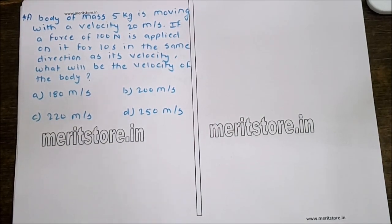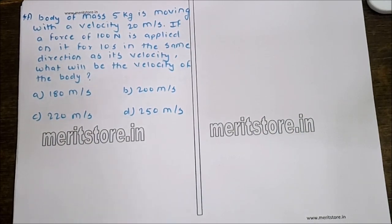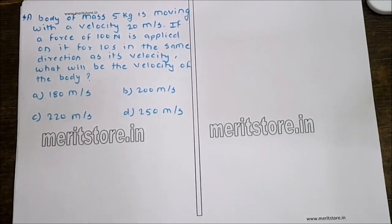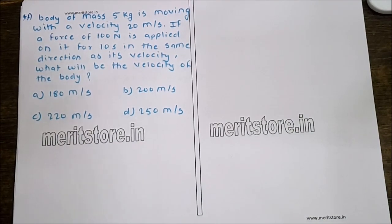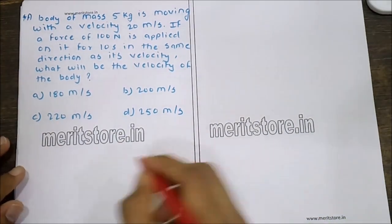A body of mass 5 kg is moving with a velocity of 20 meters per second. If a force of 100 N is applied on it for 10 seconds in the same direction as its velocity, what will be the velocity of the body? The four options are 180, 200, 220, and 250 meters per second.